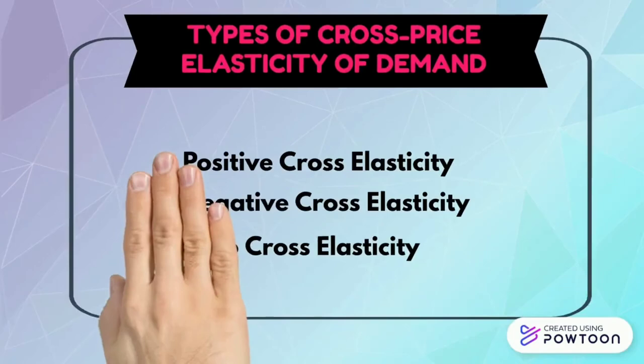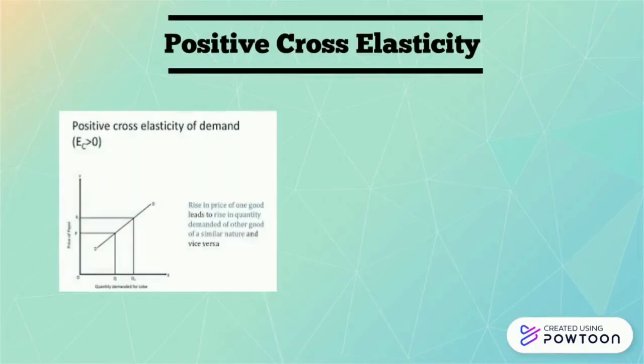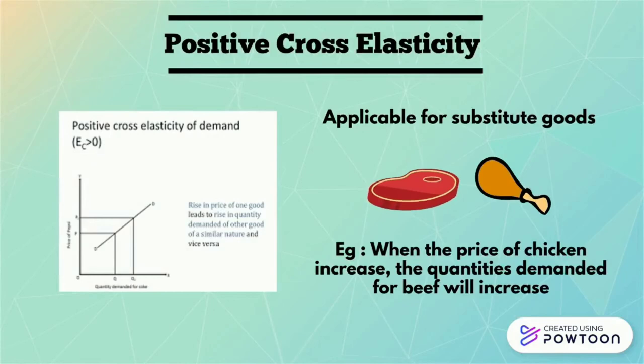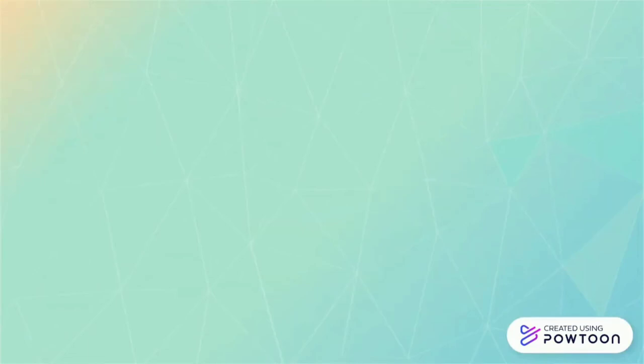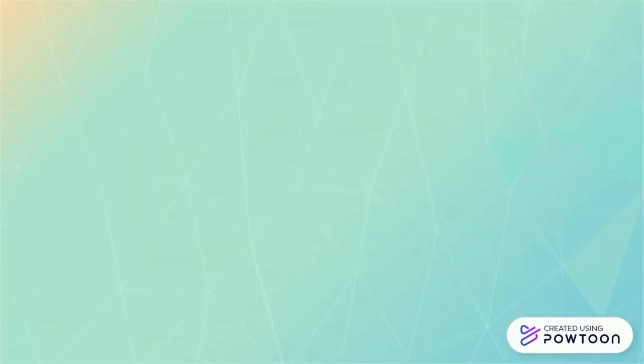There are three types of cross elasticity of demand. For the first one, positive cross elasticity, which is applicable for substitute goods. For example, when the price of chicken increases, the quantity demanded for fish will increase too. Next, negative cross elasticity, which is applicable to complementary goods. For example, when the price of ink increases, the quantity demanded for a pen will decrease. The third one is zero cross elasticity, where the products have no relationship. For example, when the price of a bottle increases, there is no effect on the demand for horses.